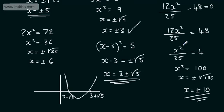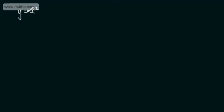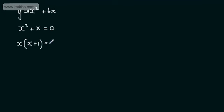We're now going to look at factoring quadratic equations to solve. The first type has the form ax² + bx = 0 (no c term). For example, x² + x = 0. We can factor this as x(x + 1) = 0. Either x = 0 or x + 1 = 0, meaning x = -1. We get two solutions because any number multiplied by zero is zero.